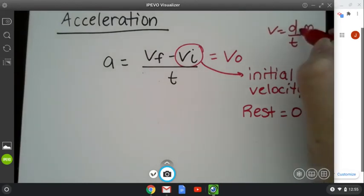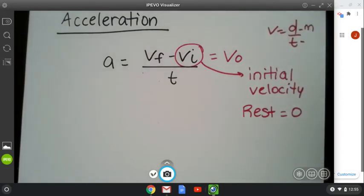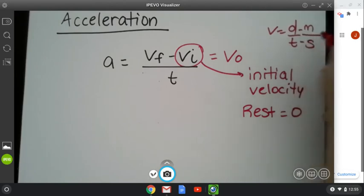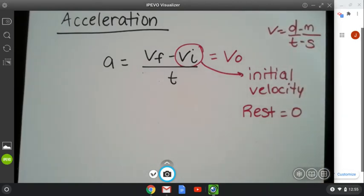Well, distance is going to be meters. We're using our SI units. And t is s, or seconds. So your units are meters per second. So if you see anything that's meters per second, that's a velocity.